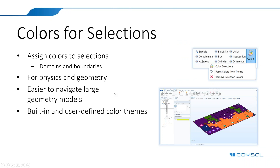A long-standing user request has been the capability to assign colors to different parts of a model. You can now do this by assigning colors to selections, available at the domain level and the boundary level for both physics and geometry. When you have a model with lots of domains and boundaries, you can assign colors to various parts to more easily identify them and communicate what's going on — for example, all constrained boundaries in red and boundaries with loads in yellow.